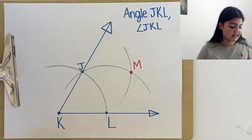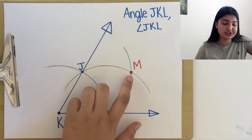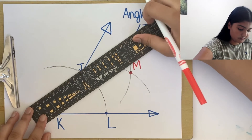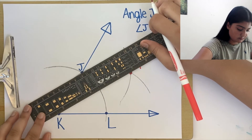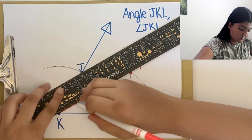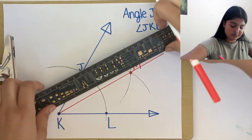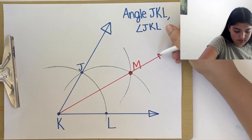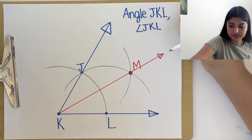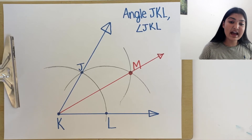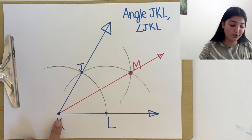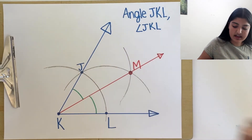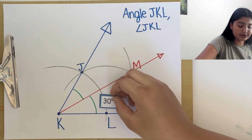We can make a ray that goes from K to N and extends. So, we have bisected this 60 degree angle into two angles that measure 30 degrees each.